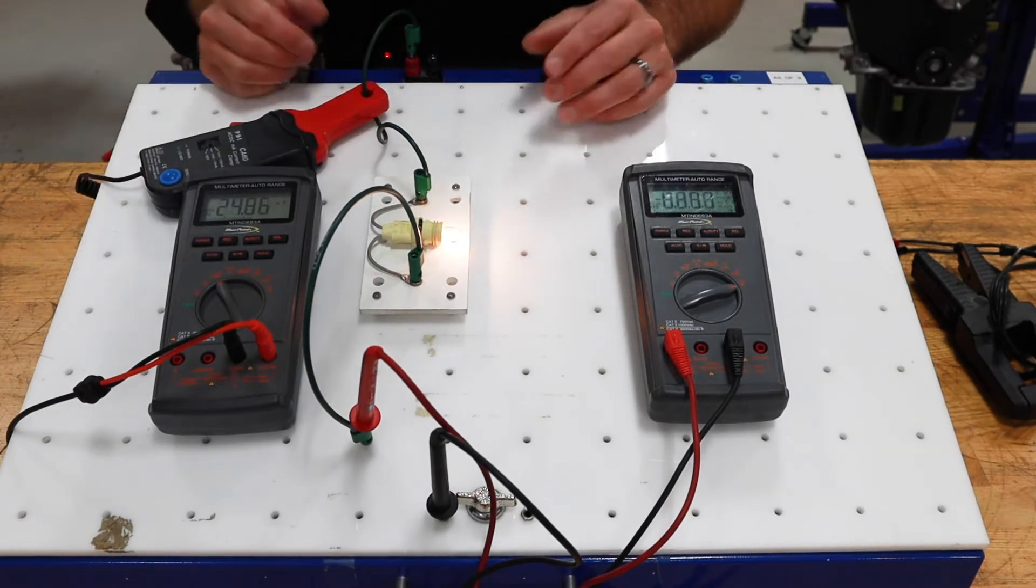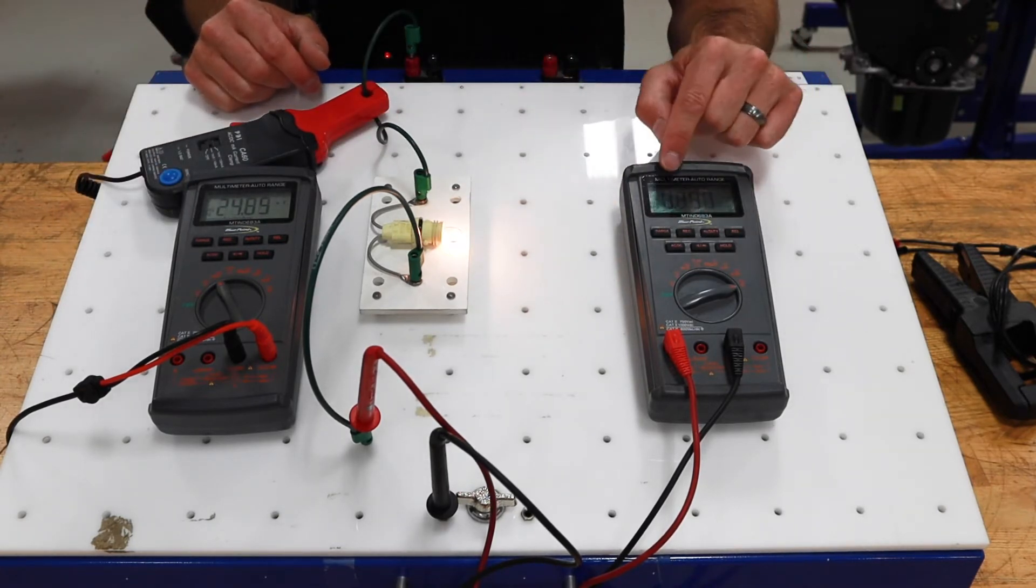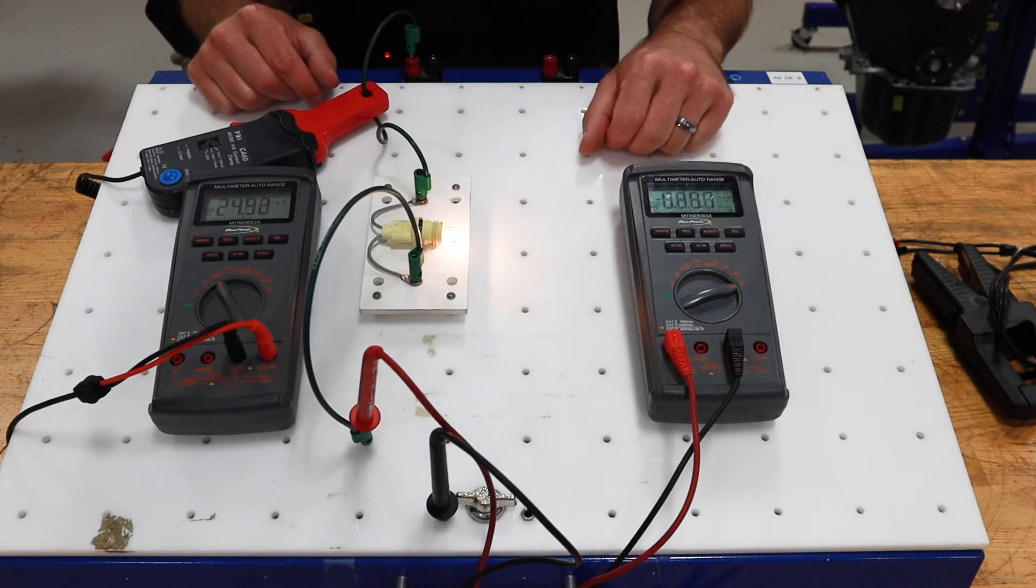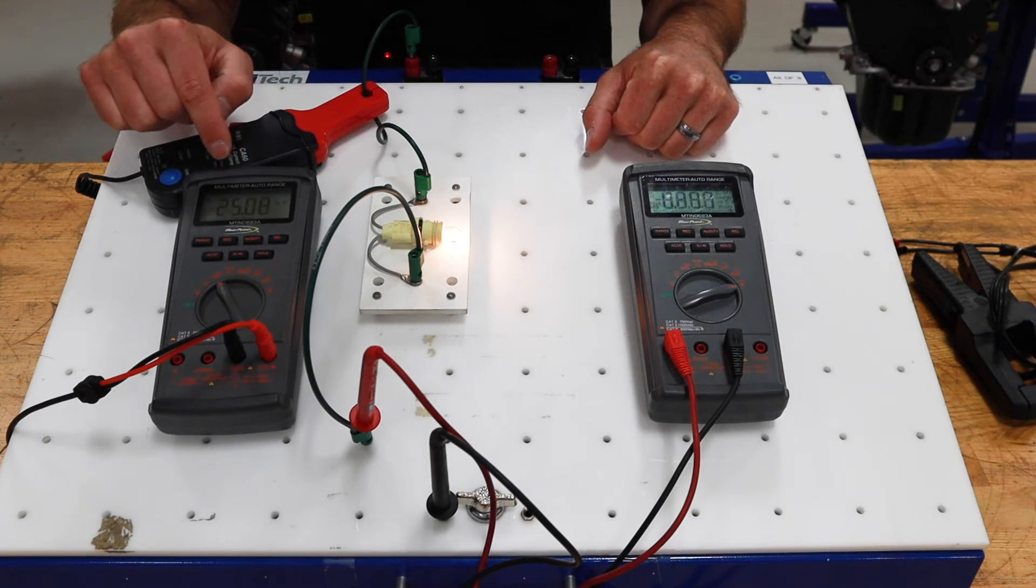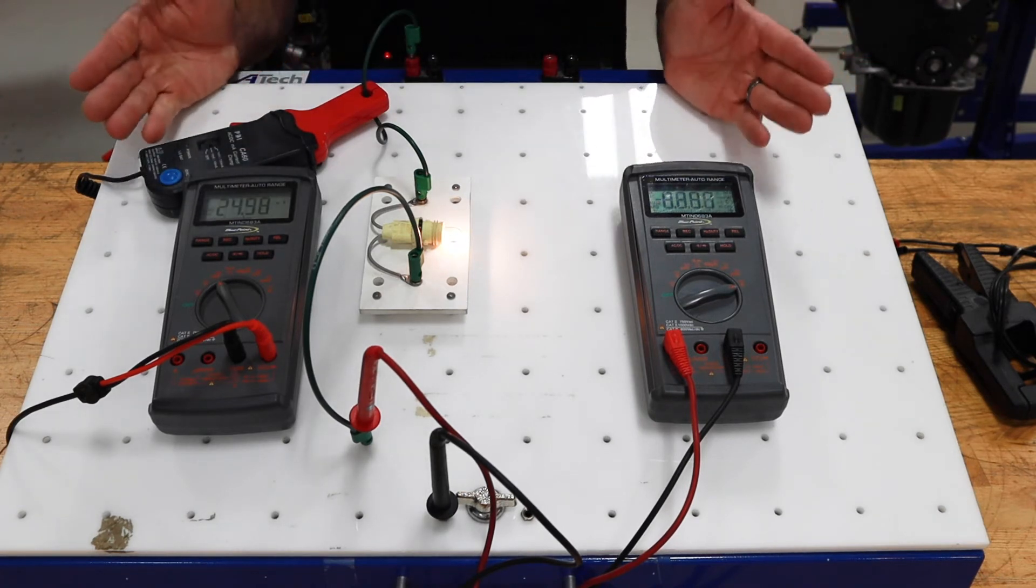With everything hooked up, I'm getting very similar numbers. I've got about 0.251 amps on my hardwired meter current measurement, and the amp clamp is showing about 0.2499 or 250, and so they're very consistent.